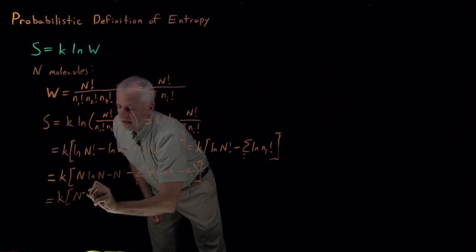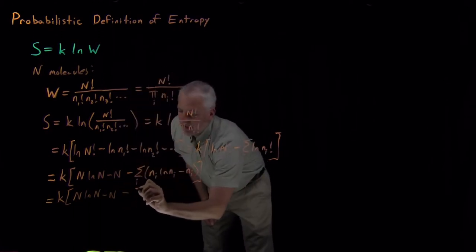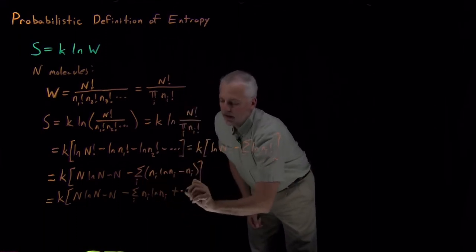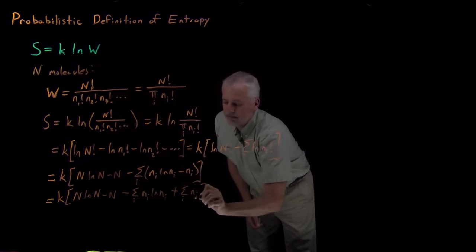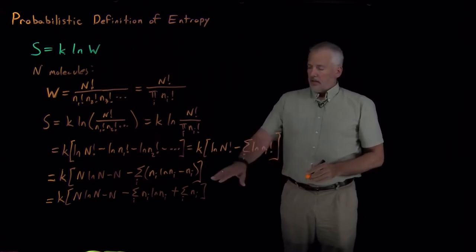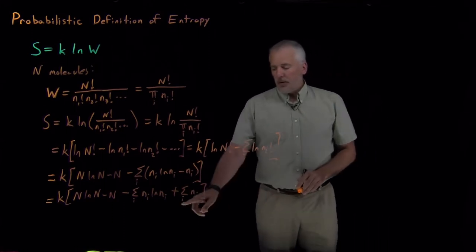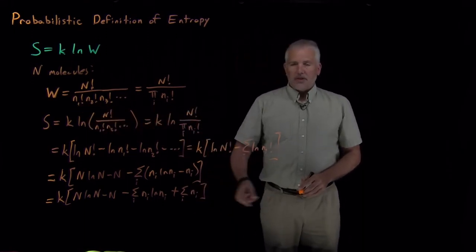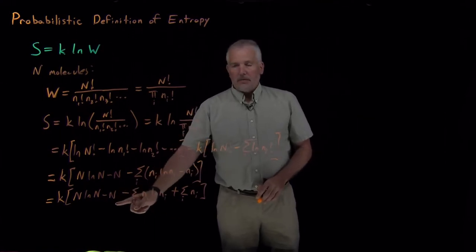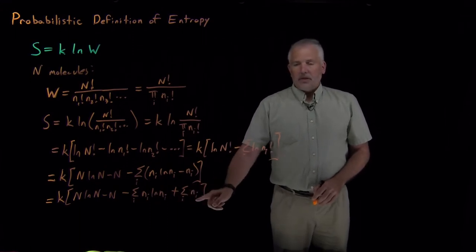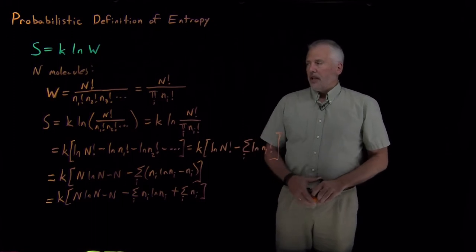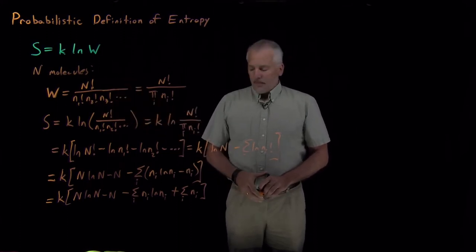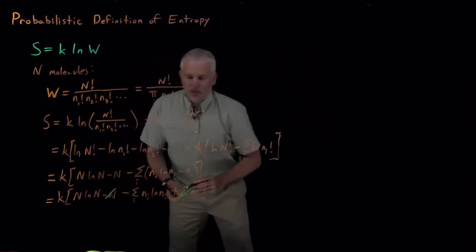After applying Stirling's approximation, I have k times N log N minus N, minus the sum of n_i log n_i, plus the sum of n_i. Now we can see some cancellation: the sum of the little n's — how many molecules are in state 1, state 2, and so on — added together is just the total number of molecules N. So minus N cancels with plus the sum of n_i. This cancellation always happens in a binomial or multinomial: the sum of all the little n's equals big N.